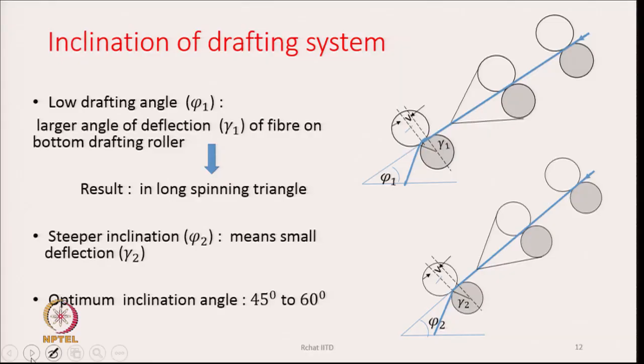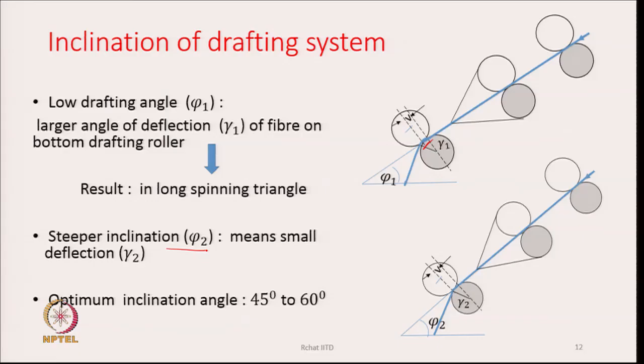Regarding the inclination of the drafting system: a low drafting angle produces a larger angle of deflection of fibres on the bottom drafting rollers and results in a long spinning triangle. A very long spinning triangle may reduce fly liberation but increases end breaks because the length of the weak zone increases. A steeper angle means smaller deflection. Therefore the optimal angle is kept around 45 to 60 degrees — some manufacturers use 45 degrees, others 60 degrees.